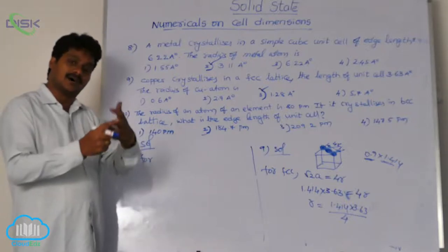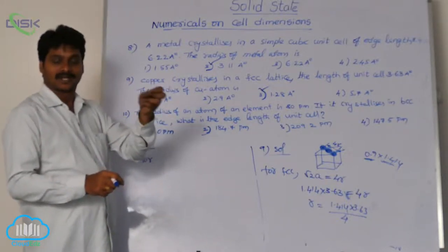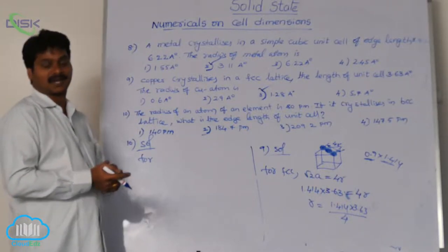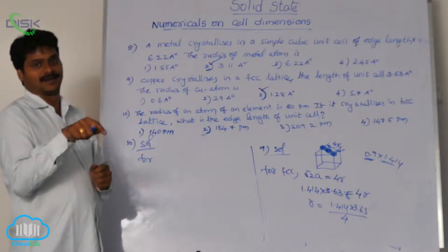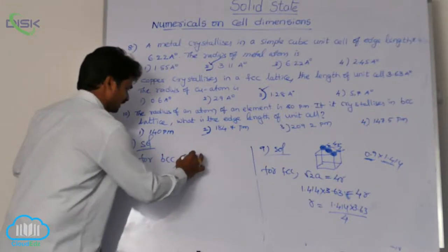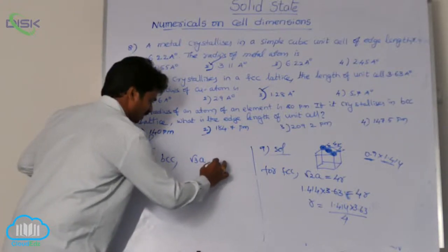So, the body diagonal length contains how much radius? From the corners, half atoms. And from the body center, a complete atom. Complete atom means 2r, half atom means r. That means for BCC, body diagonal length root 3a equals 4r.